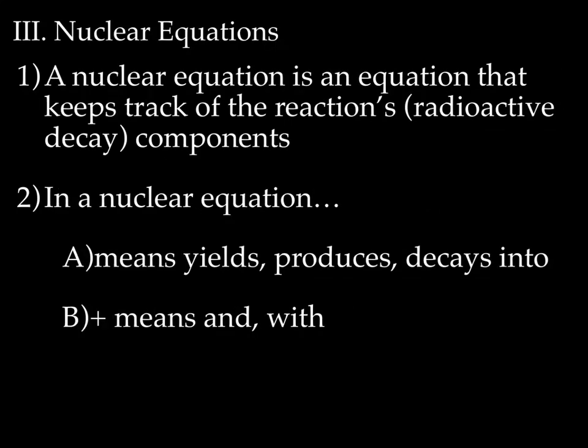So let's talk about nuclear equations. A nuclear equation is an equation that keeps track of a reaction's components, and in this case, the reaction we're talking about is radioactive decay. We have two symbols you need to know for every equation. An arrow means things like yields, produces, decays into. And a plus sign, which when you're reading a word problem would mean and with.